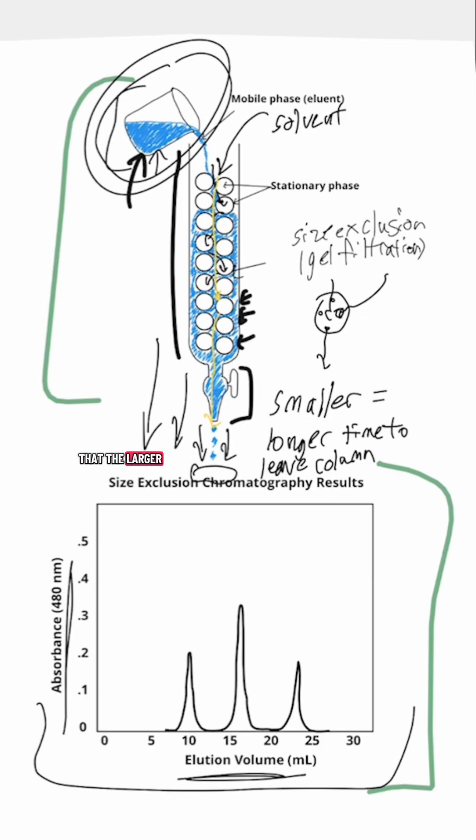We said earlier that the larger the molecule is, the easier it exits that column. So we can look at this graph and the peaks that show up with the least amount of volume are created by the largest molecules. The next peak would be slightly smaller, and the peaks to the far right required the most amount of volume, so those would be the smallest molecules.